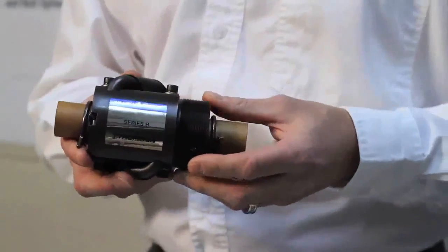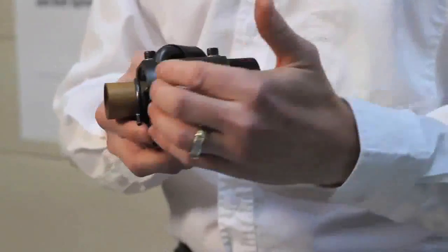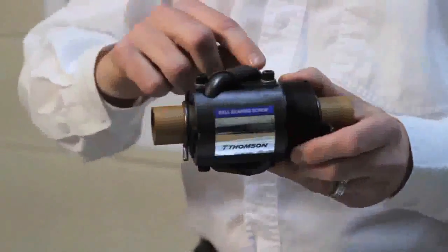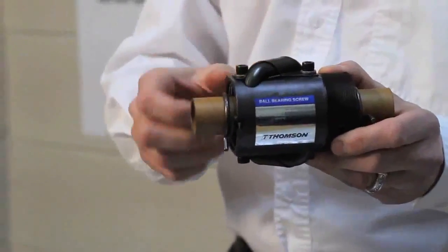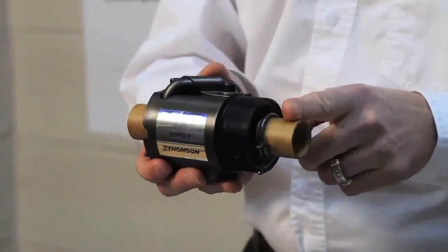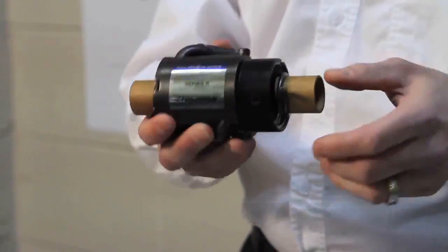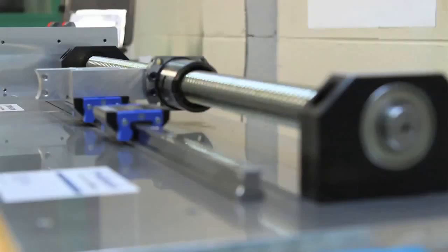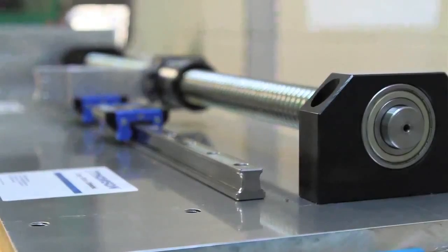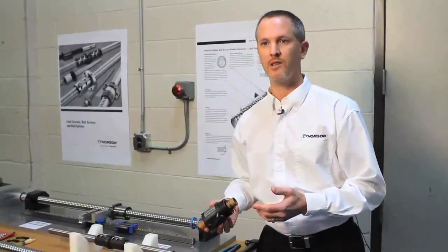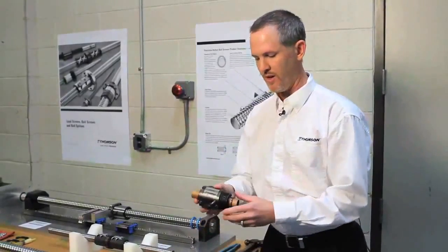It has all the major components of a ball nut, as you can see, the ball nut body itself. You've got the return tube system, which in this case is an external tube. What this one's shipped on is called a shipping arbor, and the arbor is constrained inside the ball nut. When a customer receives a ball screw as components, they'll receive a screw and a nut.